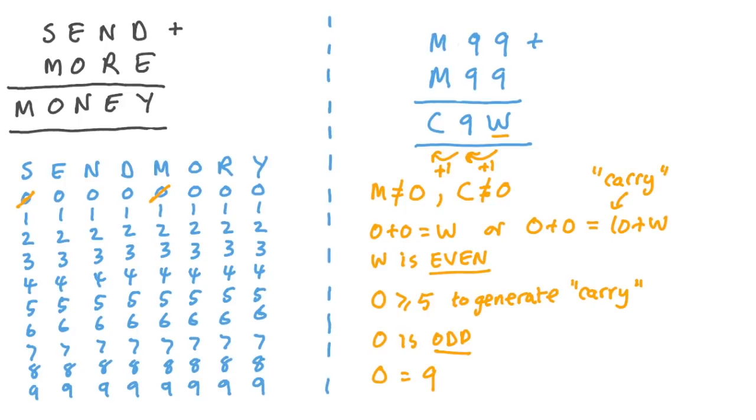Well, now that we know that o is 9, we know that m can't be 9, w can't be 9, and c can't be 9. So if we'd made a grid, we'd be able to cross those off. But in fact, more importantly than that, here we know that w must be 9 plus 9 is 18, w must be 8. Again, we know that c and m can't be 8.